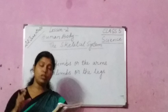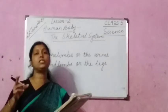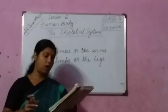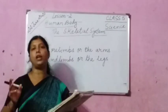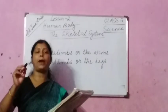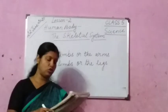The thigh bone, known as femur, is present in the upper leg and is the longest bone in the body. The lower leg has two long parallel bones called tibia and fibula.